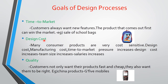The second goal is design cost. Many consumer products are very cost sensitive, so design cost and manufacturing cost are very essential because they decide the cost of the product. As time to market pressure increases, the design cost also increases because team size increases. They have to complete the project within a limited period of time, so more salaries are given to team members, and automatically the cost gets increased.